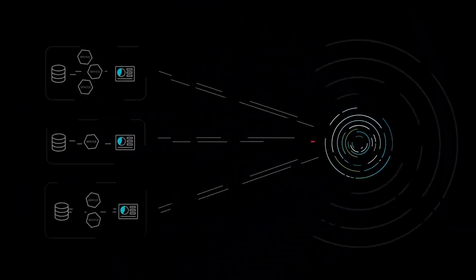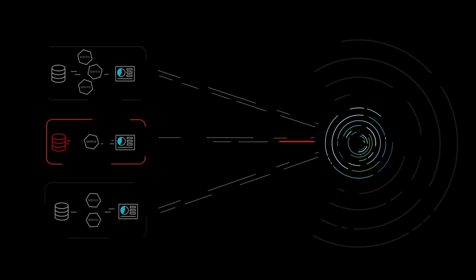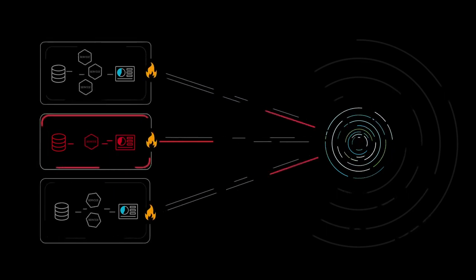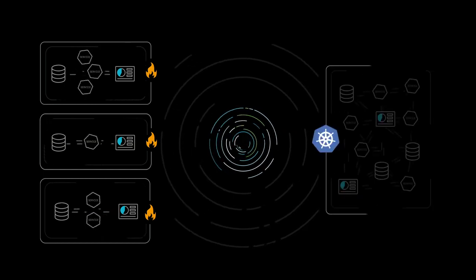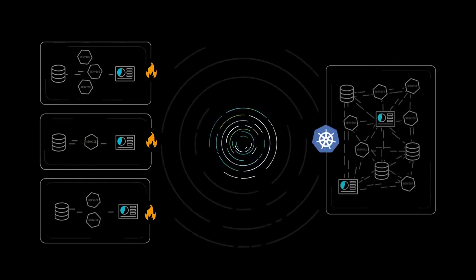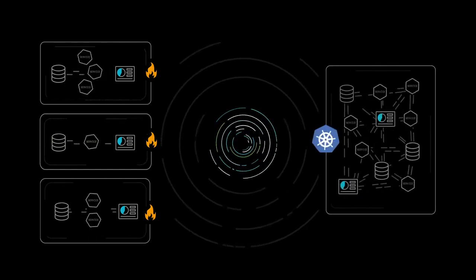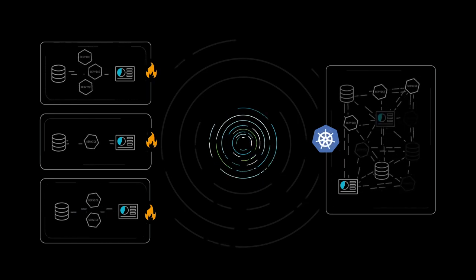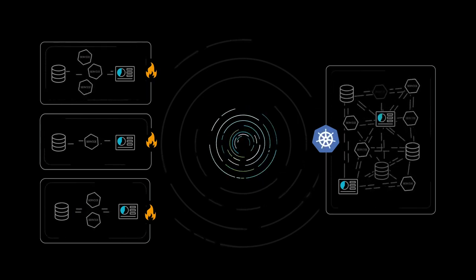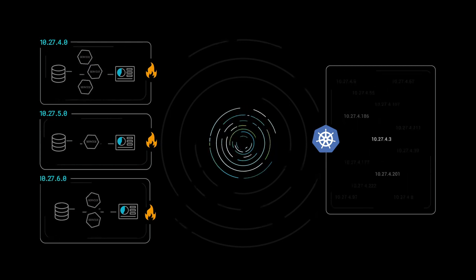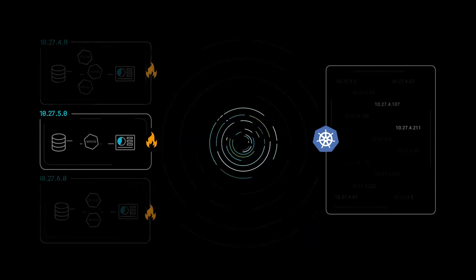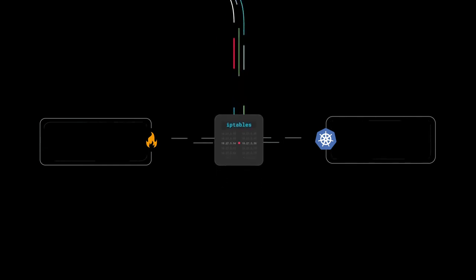A zero-trust approach for network security is a must to block unnecessary connections between pods, services, and apps. But when your traditional applications move to Kubernetes, you become blind to how your apps are communicating. Where do you start? The dynamic nature of Kubernetes makes static IP addresses obsolete, and container firewalls are a man-in-the-middle approach — they introduce complexity with IP tables not managed by Kubernetes.